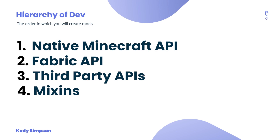This next part is what I call the hierarchy of development — it's the order in which you should create your mods. When creating Fabric mods you're not only going to use Fabric; you'll be using the native Minecraft API itself, the Fabric API, third-party APIs, and mixins. There's a recommended way to approach these because you want to rely on other people's code before writing your own, to avoid making things harder for yourself.